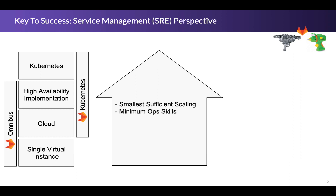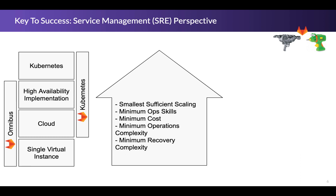In addition, the minimum operational skills increase. For a single virtual instance, someone with Linux skills can be pretty comfortable. But as you move up, you'll need cloud skills and eventually HA skills — both for initial design and deployment as well as ongoing maintenance. Minimum costs tend to go up, as does minimum operational complexity: what it takes to start, stop, and upgrade the stack. Minimum recovery complexity also goes up as you move up the stack, depending on your storage choices.